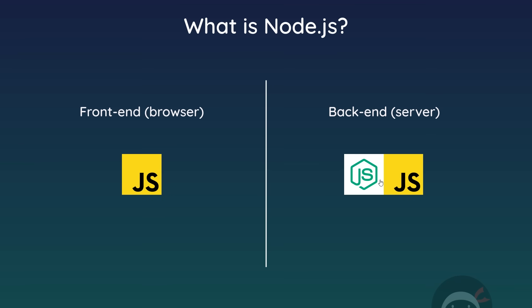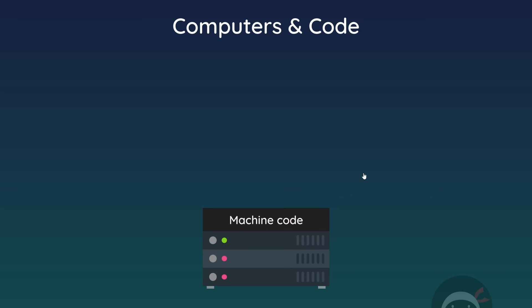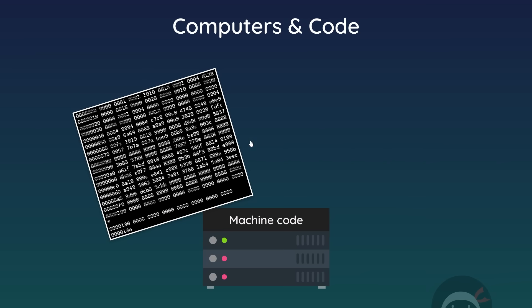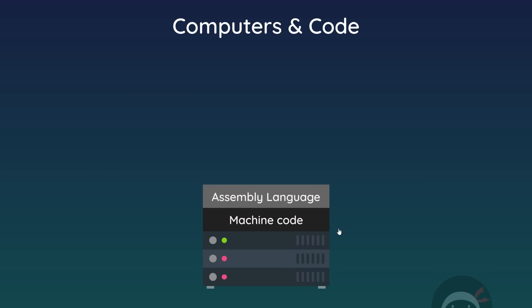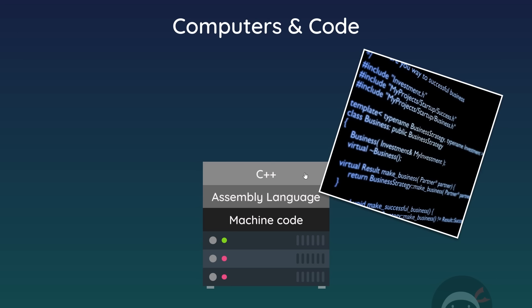Before I explain any more about that, I want to talk a little bit about how computers actually understand code. Computers really only understand machine code, but that is really complex to write and read — it's like binary. So something called assembly language is built on top of that, which is a bit easier to read and write, and is then assembled down into machine code so the computer can still understand it. But assembly language is still overly complex, so built on top of that we have programming languages like C++, which are abstracted a lot away from assembly code and are much easier to read and write. Ultimately, C++ code is compiled down to machine code, so a computer will understand it.